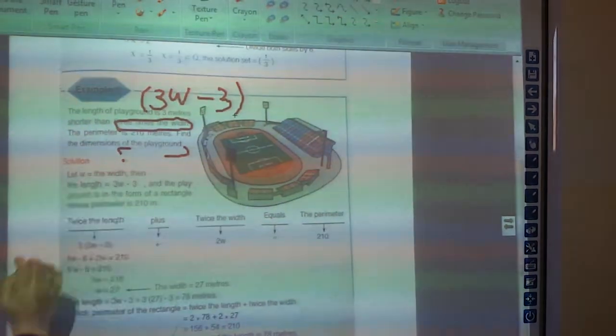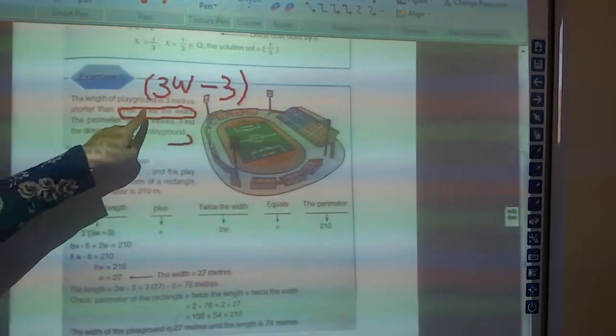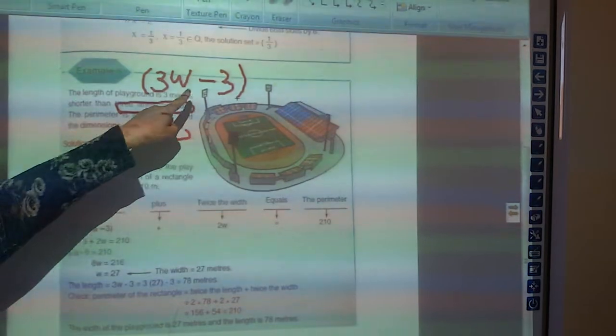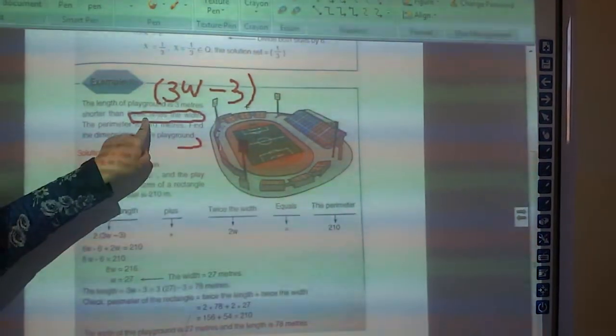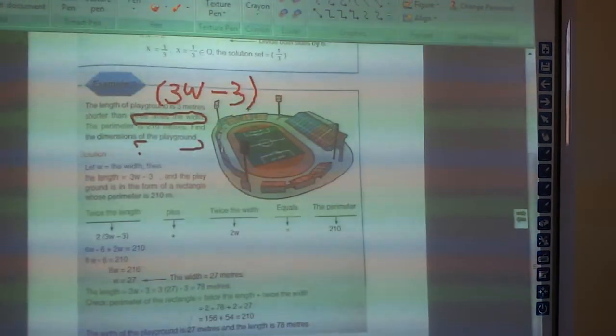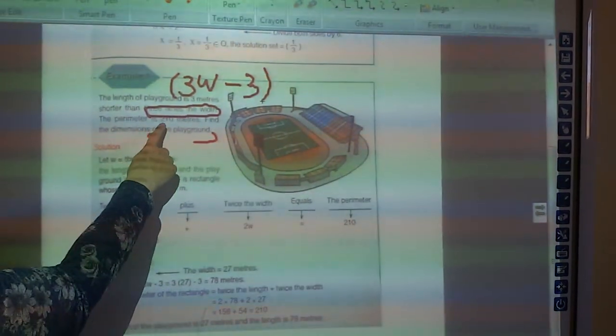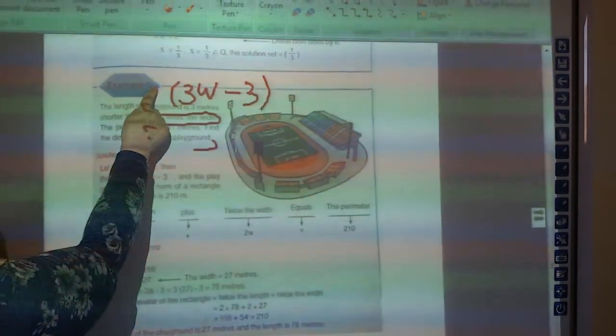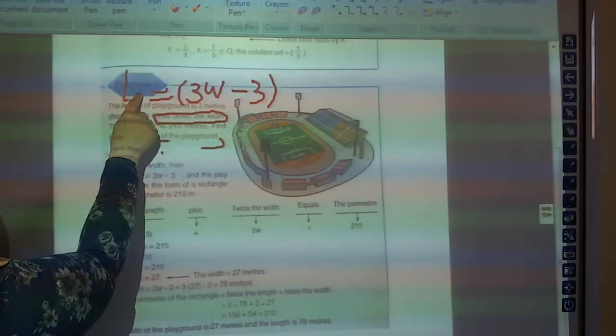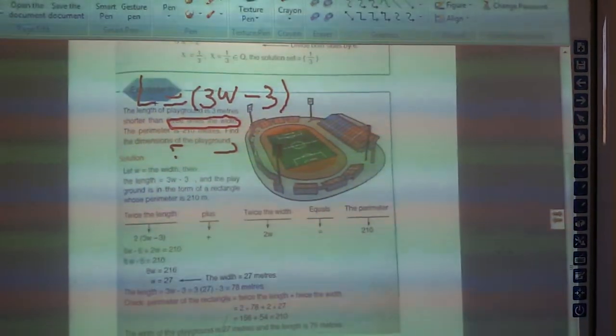So here, again, 3 meters shorter than means I'm going to make minus 3 from the 3 times the width. The perimeter is... so this is what? This is the length.